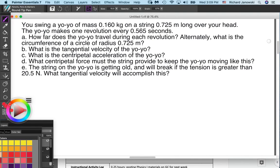Hi physics, this is Mr. Janowski. This is Chapter 10, homework number three, problem number one. You're going to swing a yo-yo with that mass on a string that long over your head. The yo-yo is going to make one revolution every 0.565 seconds.